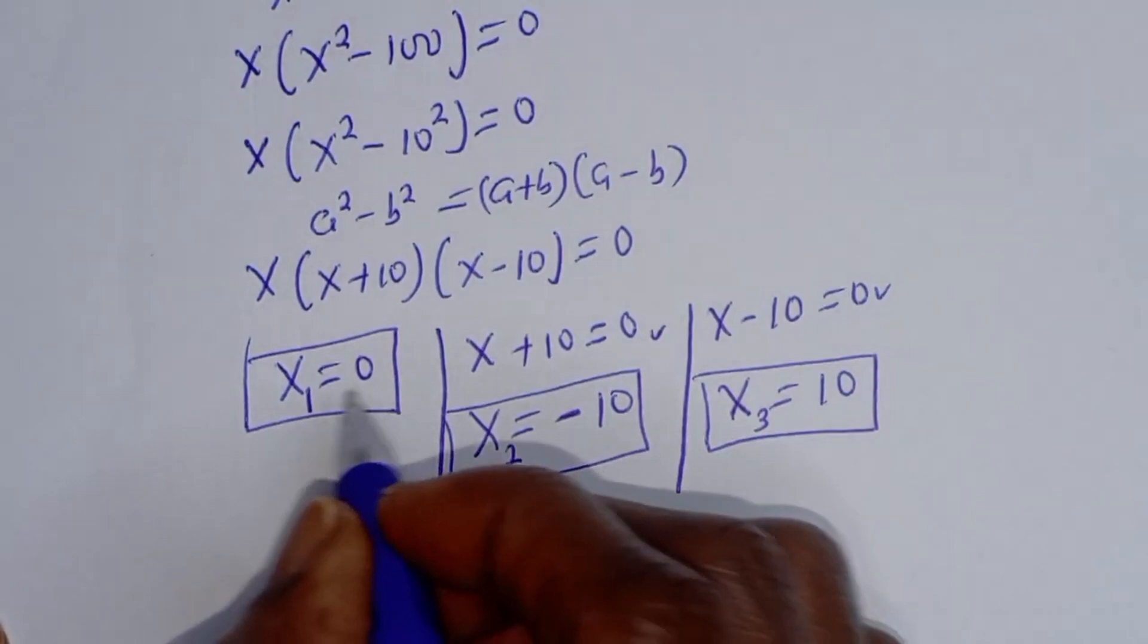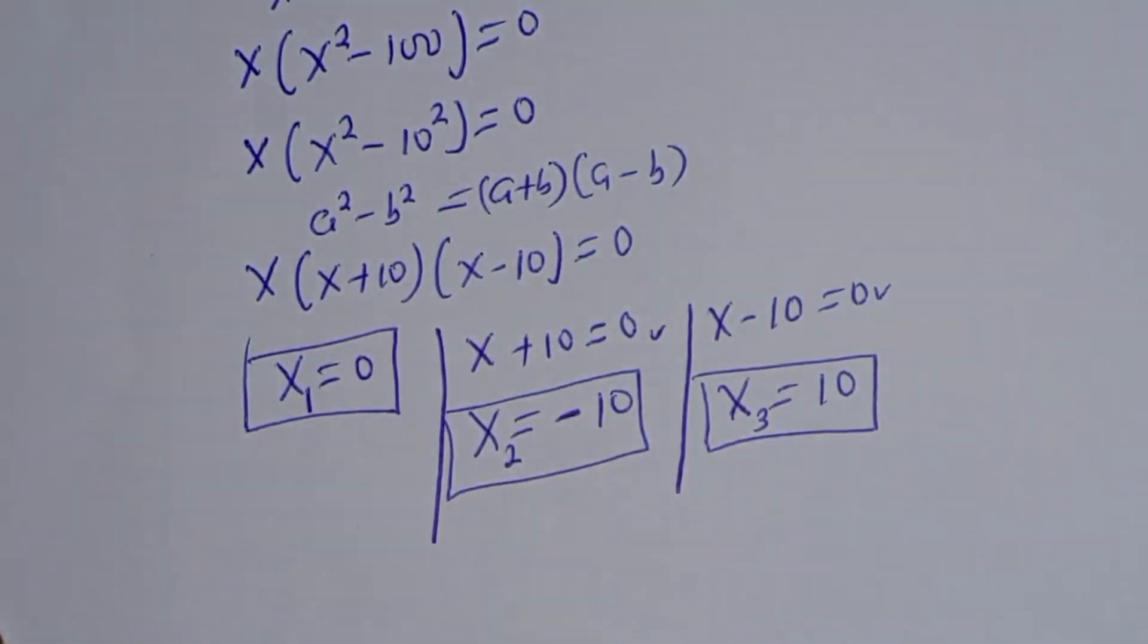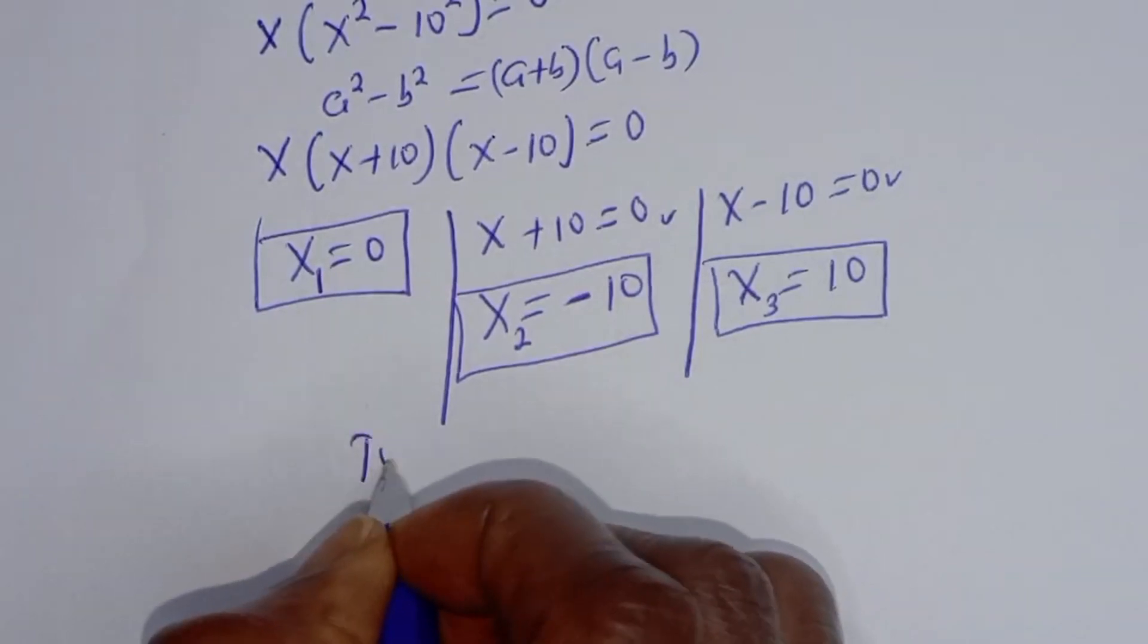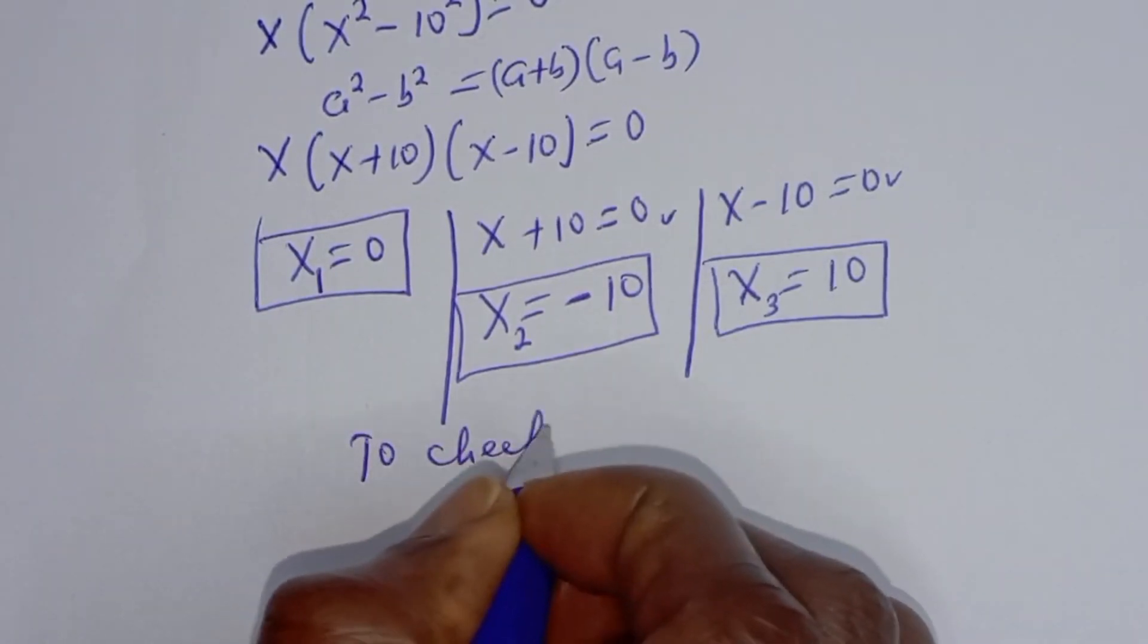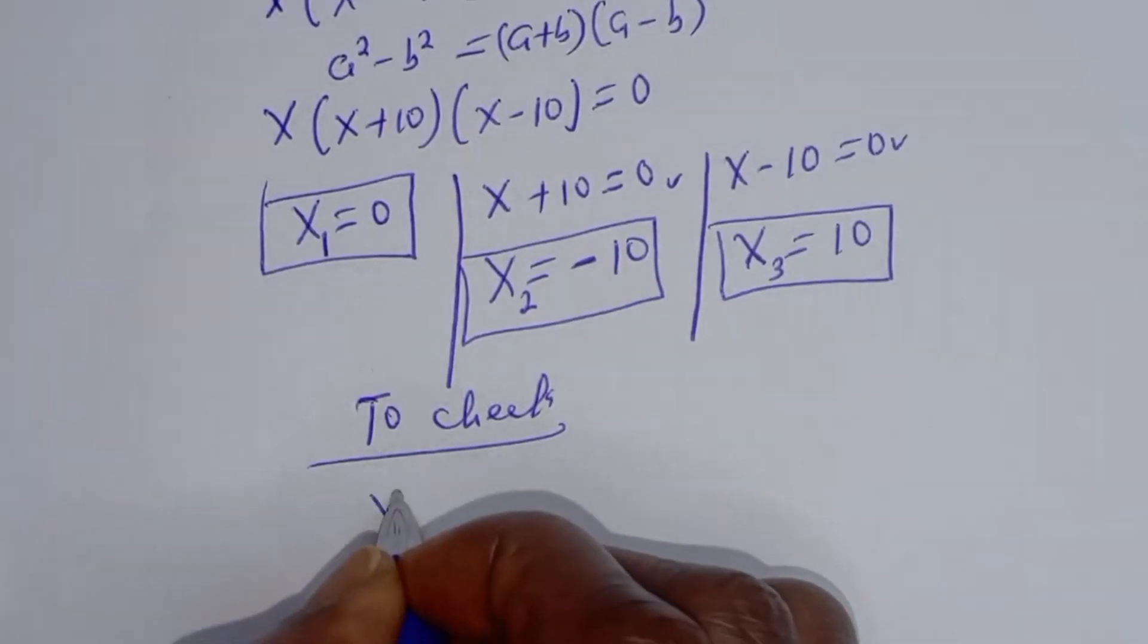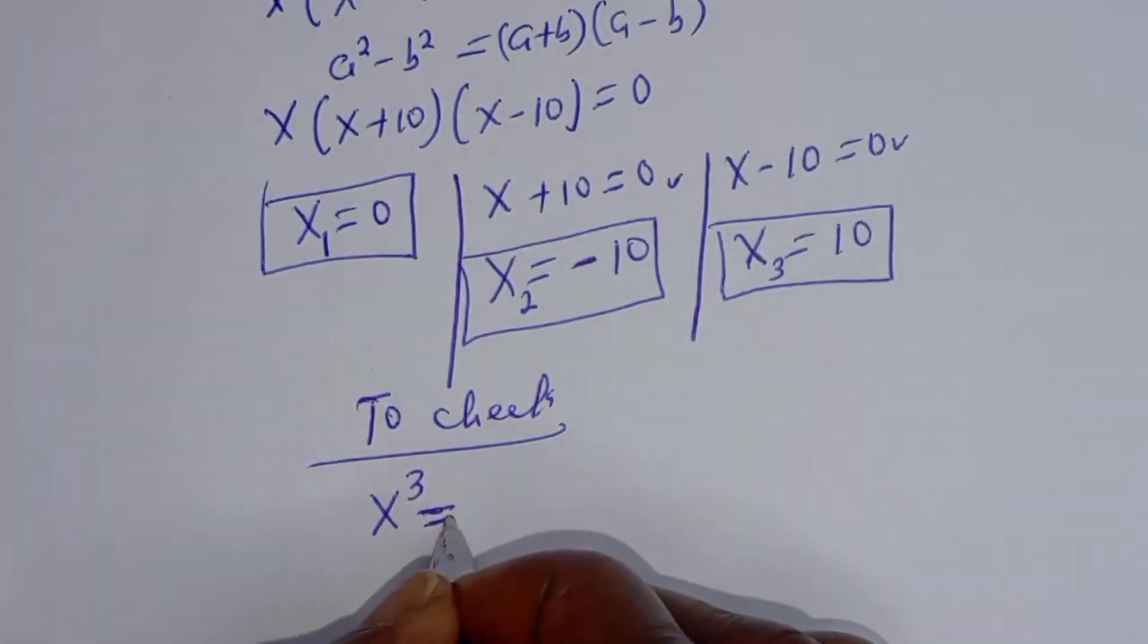This is the final answer. We can check to confirm if our answer is right or wrong. To check, we have the given equation: x raised to power 3 equals 100x.